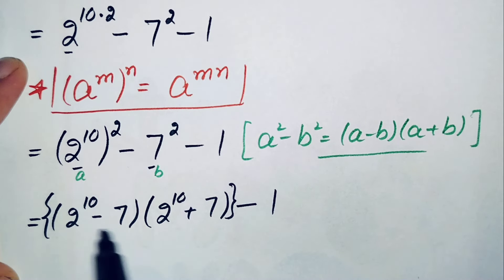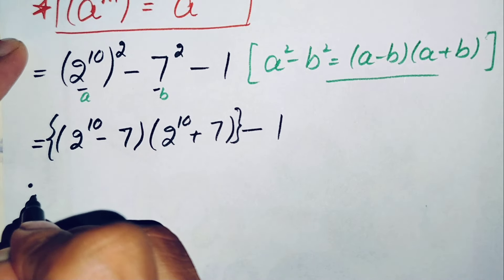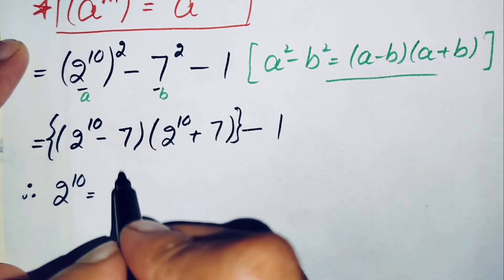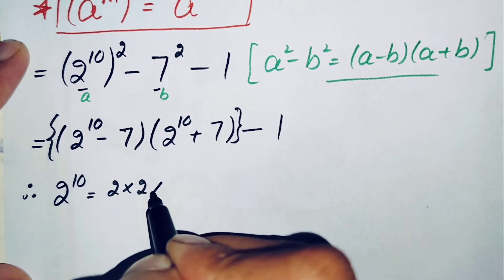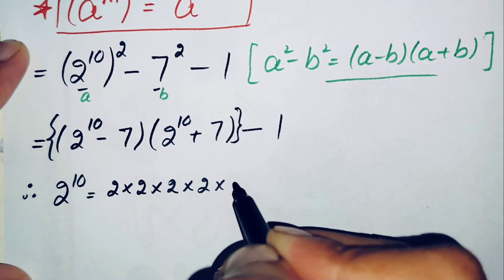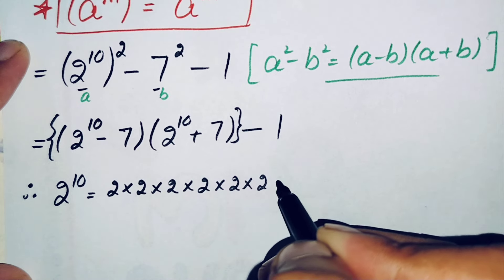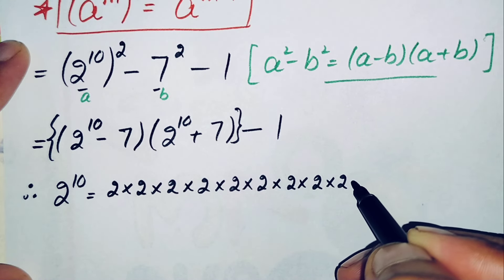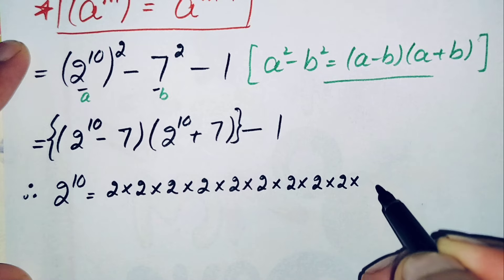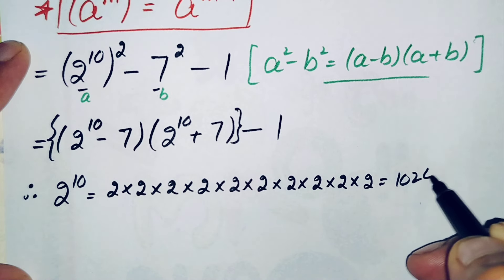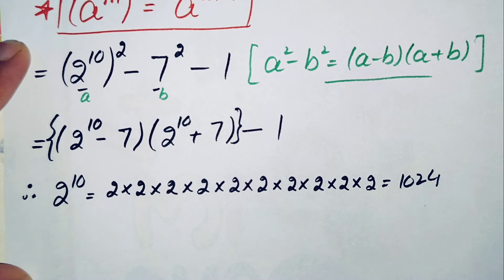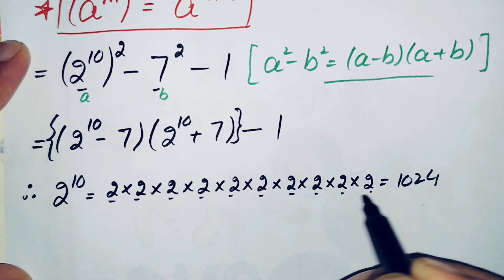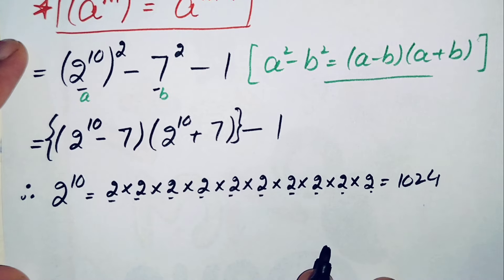Now we need to find the value of 2 raised to power 10, which means multiplying 2 ten times. 2 times 2 is 4, times 2 is 8, times 2 is 16, times 2 is 32, times 2 is 64, times 2 is 128, times 2 is 256, times 2 is 512, times 2 is 1024. So the value of 2 raised to power 10 is 1024.